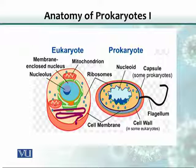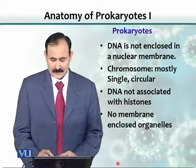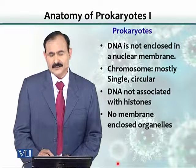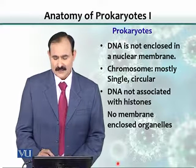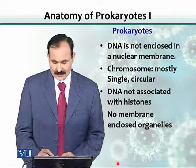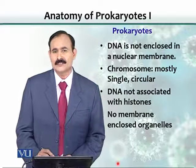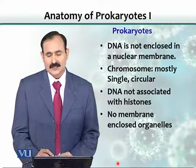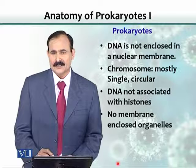Other differences include the presence and absence of organelles. Organelles are small organs present in eukaryotic cells, but not in prokaryotes. In prokaryotes, DNA is not enclosed in a nuclear membrane. Secondly, if you look at the chromosome, it is mostly one chromosome and that is also circular. Thirdly, the DNA is not associated with histones — histones are proteins that bind to DNA, and such proteins are absent in prokaryotes.